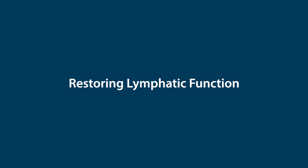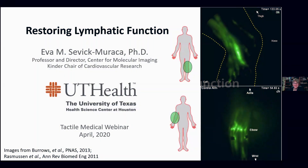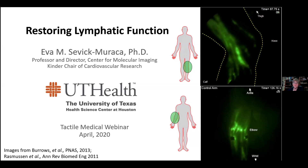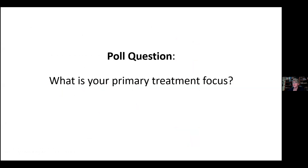Thank you everybody from home for joining me in my home office. Today we're going to talk about restoring lymphatic function. What we mean by lymphatic function is shown on your screen with the lymphatic motion on the medial knee area as well as in the arm — you see these straight lymphatic vessels that are pumping lymph, so we have immune health. Before I get started I'd like to poll everybody to figure out your primary focus, so I can direct the presentation more along the lines of the audience.